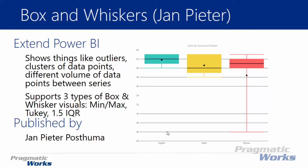The whiskers show us the spread of all of the data. The ends of the whiskers — the top end and the bottom end — show the upper and lower extremes of values. In the example here we see different types of classes: English, Math, and Physics. Physics, for example, has a lower extreme or minimum of 46 and an upper extreme of 63, so the range of values is 17. We're able to get statistical information pretty quickly.